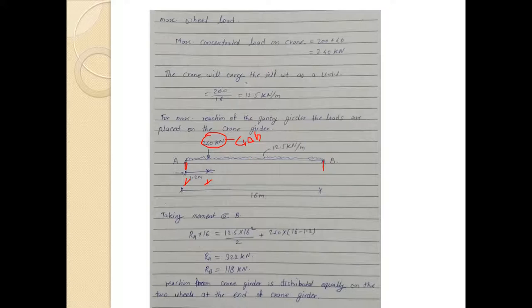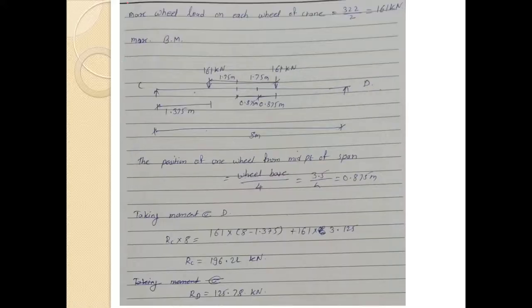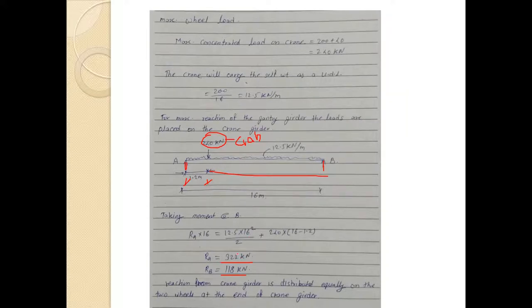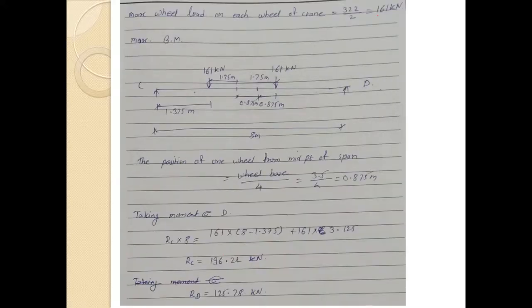Taking moment at B: RA × 16 = 12.5 × 16²/2 + 240 × (16 − 1.2). Solving gives RA = 322 kN and RB = 180 kN. The reaction from the crane girder is distributed equally on the two wheels at the ends of the crane girder, so the maximum wheel load on each wheel is 322/2 = 161 kN.